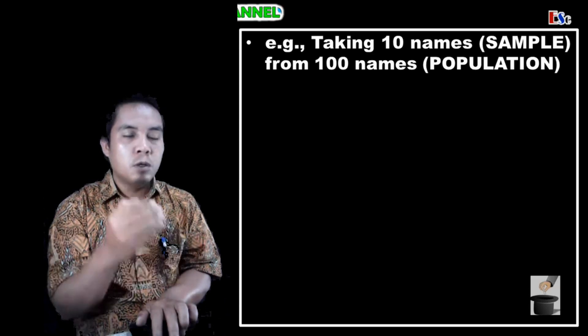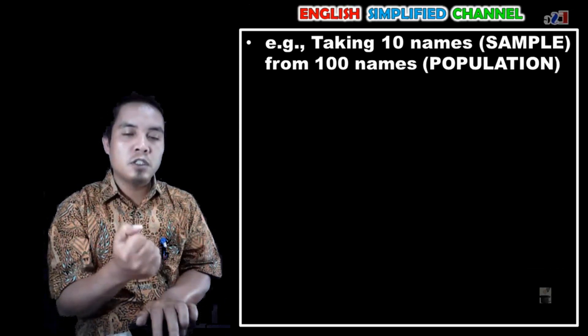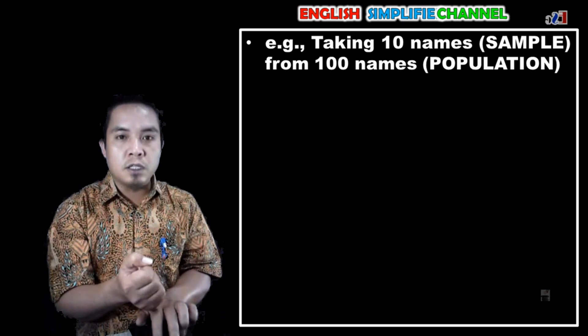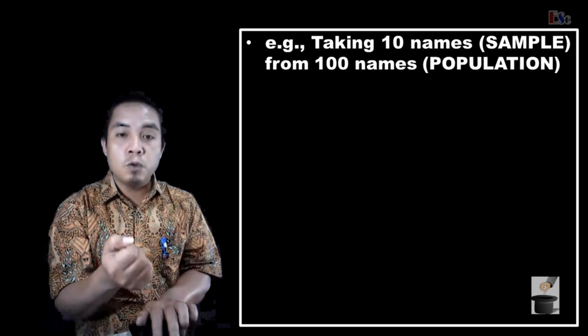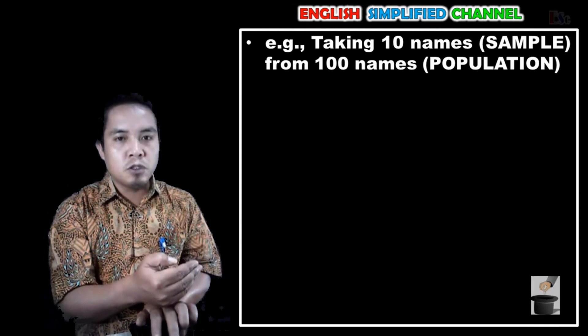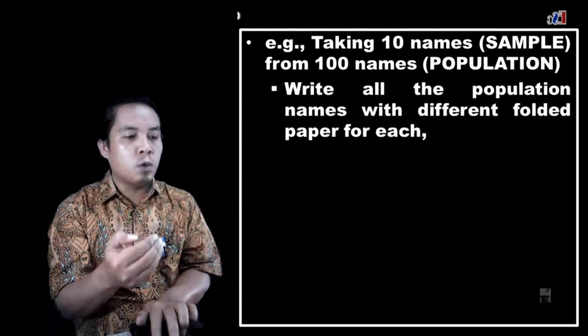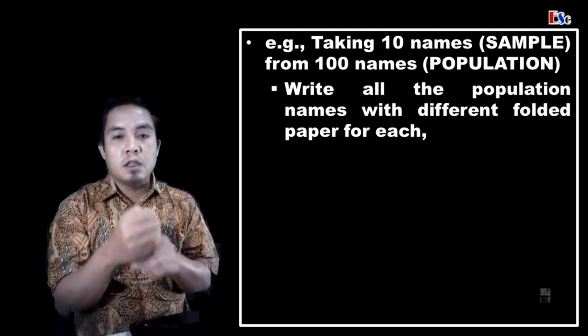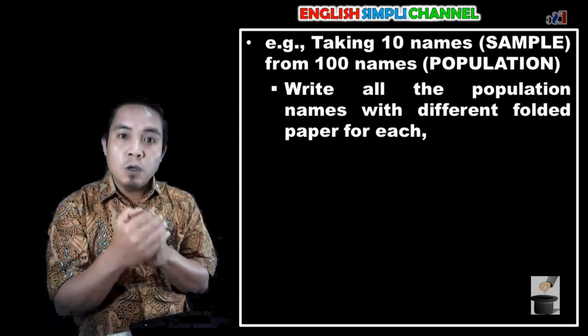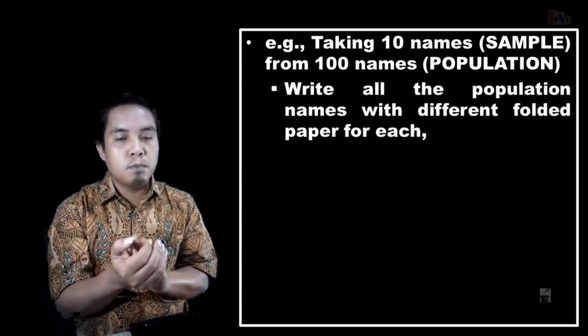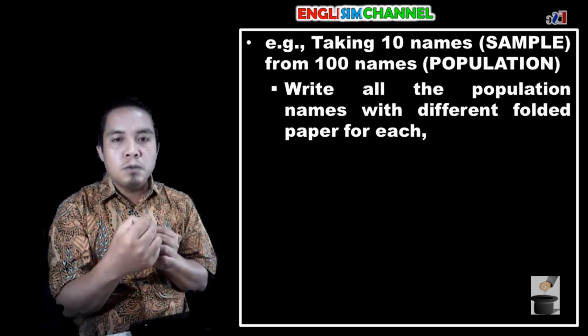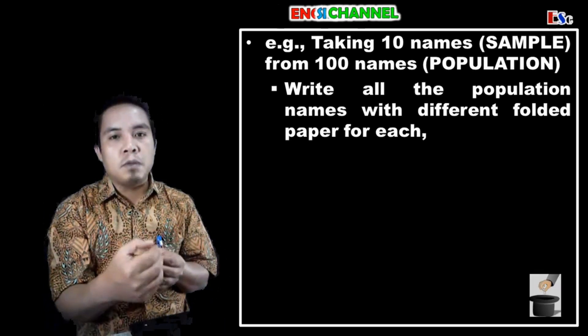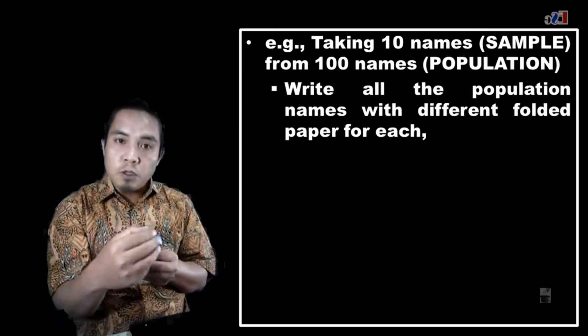For example, we want to take 10 samples from the population. By following the procedures as we had already discussed in the previous videos, the procedures: first, write all the population names with different folded paper for each. It means there are 100 population, so we will have 100 folded papers because all the names will be written separately, one, two, three, four, until all of them are written in folded papers for each.